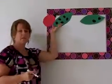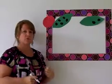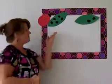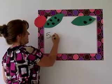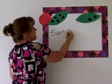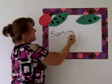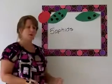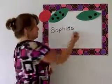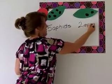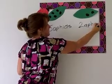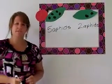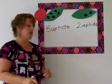I have a ladybug here and she comes across her leaf with five aphids on it. She's very hungry, so she eats all five aphids. Then she comes across another leaf and it has two aphids on it. She's still very hungry so she eats two more aphids. I want to know how many aphids did the Grouchy Ladybug eat in all.